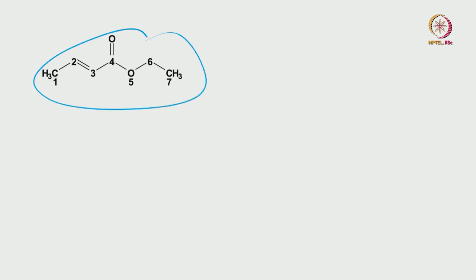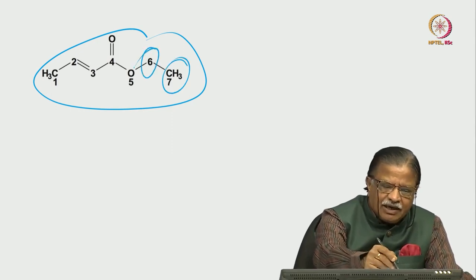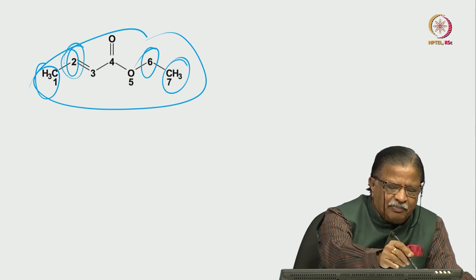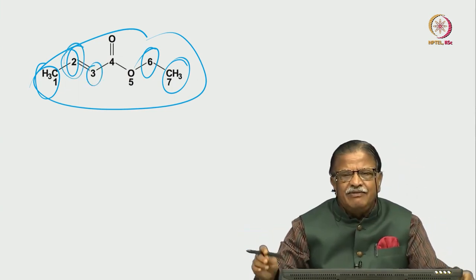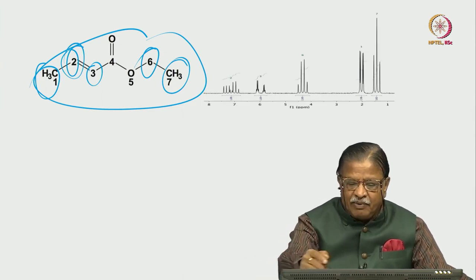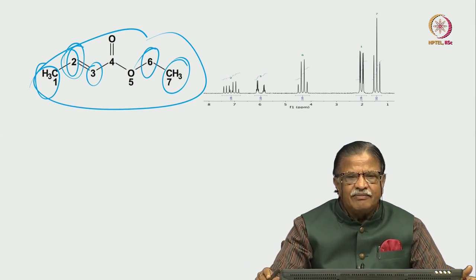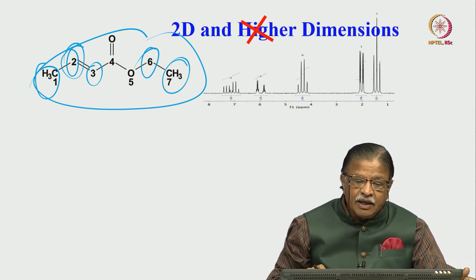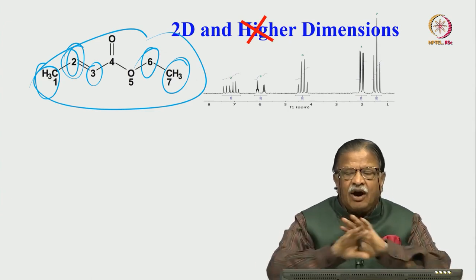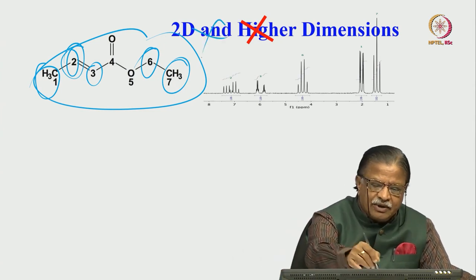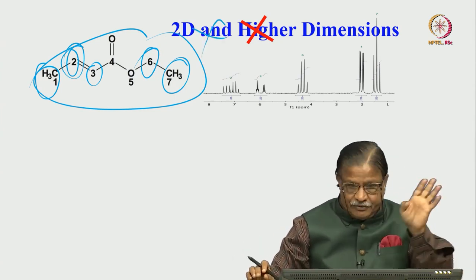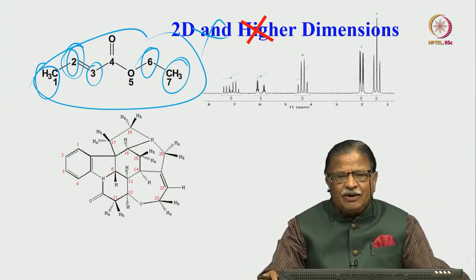We will start today with a discussion on how you choose the dimensionality for your given molecule. For example, consider a molecule whose spectra we can analyze in 1D NMR very easily. Simply look at the CH3 — it is a triplet and a quadruplet. You know a triplet, quadruplet, triplet — it is very easy to analyze the 1D NMR spectrum. Not much difficulty, so you do not require more than 1D; 2D and higher experiments are not needed at all.